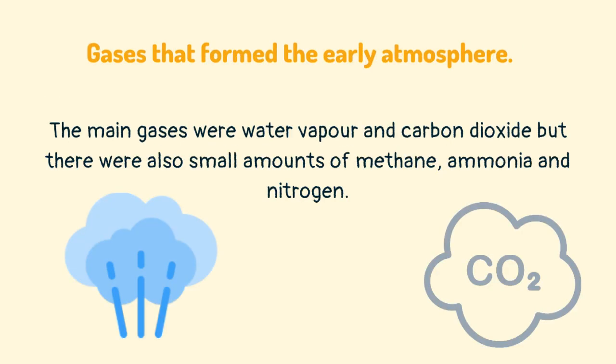The main gases that formed the early atmosphere were water vapor and carbon dioxide, but there were also small amounts of methane, ammonia and nitrogen.